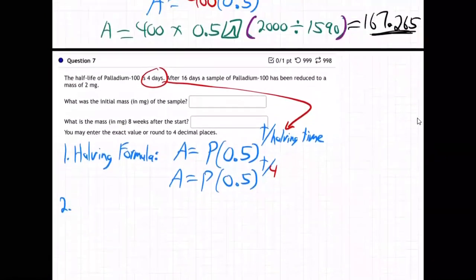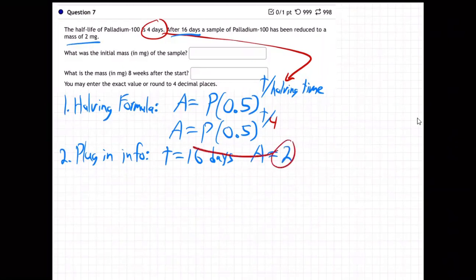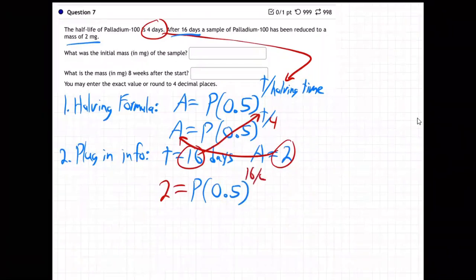What did they give us? They told us after 16 days it's reduced to 2 milligrams. T equals 16 days, the amount has become 2. So we'll plug in 2 for A, 16 for T. We get 2 equals P times 0.5 to the 16 over 4. Now we only have one letter, so we can solve for that letter.